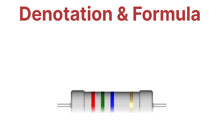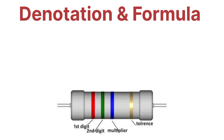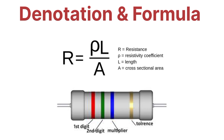Now let's talk about the denotation and the formula for resistance. Resistance is originally denoted as capital R, and the formula for resistance is R = ρL/A. Here, ρ (rho) is the resistivity of the material, L is the length of the material, and A is the cross-sectional area of the material. This is the denotation and the formula for resistance.